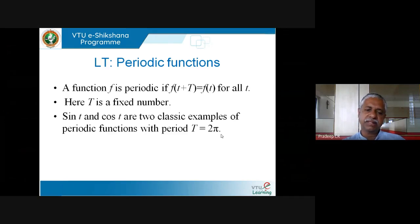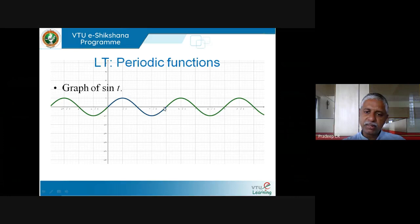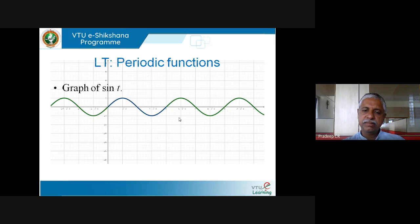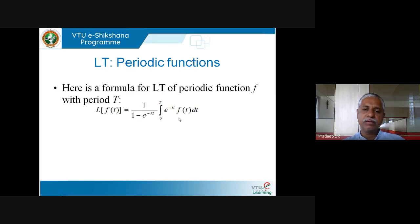Sine t and cos t are two classic examples of periodic functions with period 2π. The graph of sine t looks like a blue colored curve between 0 and 2π, repeating itself. Algebraically, f(t + T) = f(t). With cos t, from 0 to 2π it repeats — both have period 2π. We also saw how to find the Laplace transform of a periodic function.